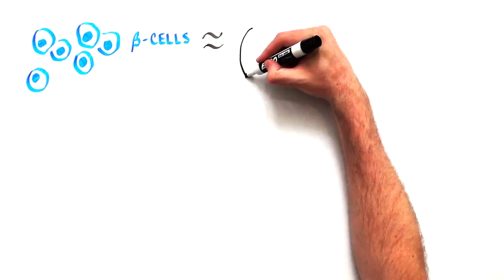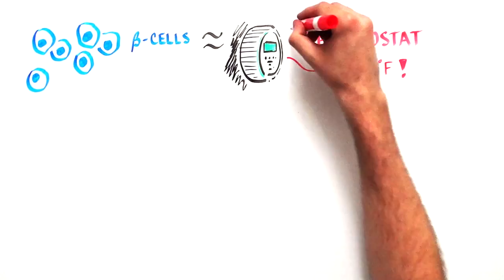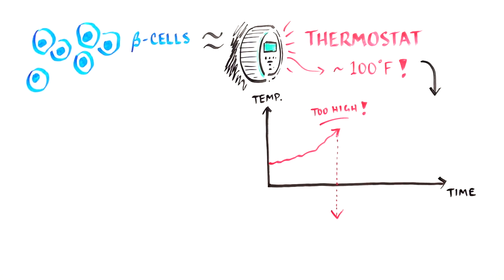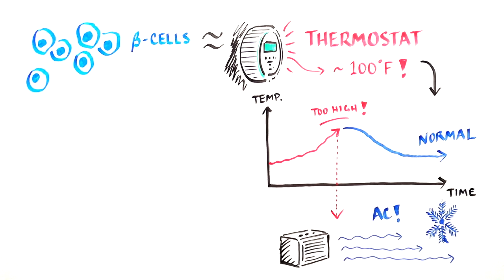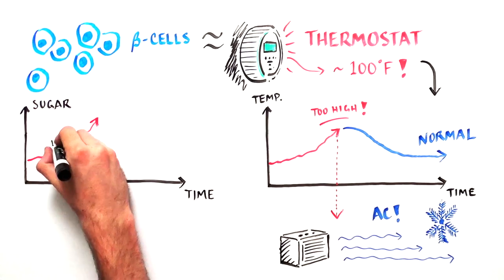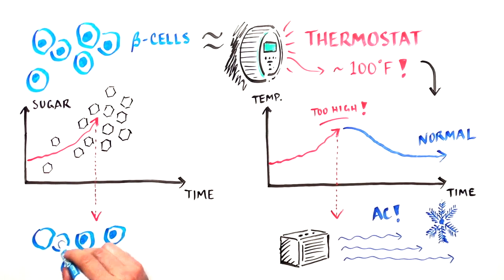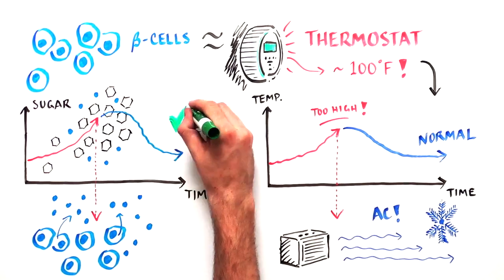Beta cells respond to blood sugar levels similar to a thermostat. When the temperature gets uncomfortably high, the air conditioner turns on to bring the room back to normal temperature. When blood sugar levels get too high, beta cells turn on and produce insulin, which will reduce blood sugar levels.